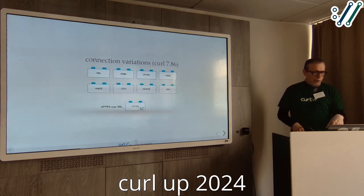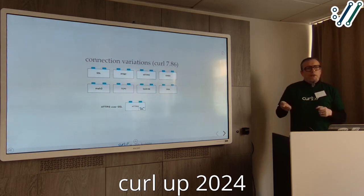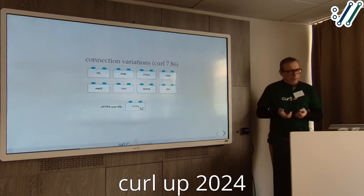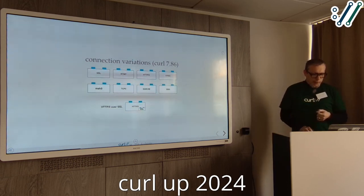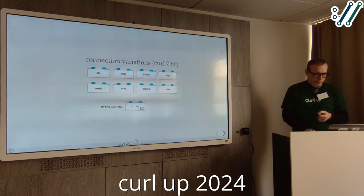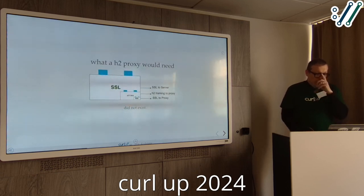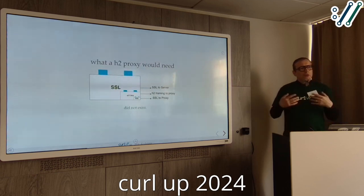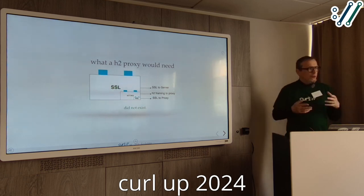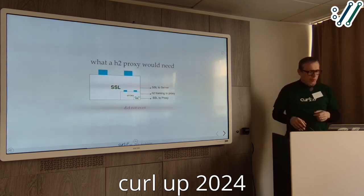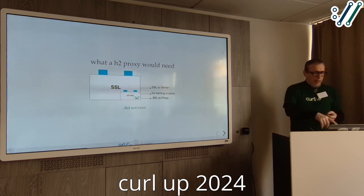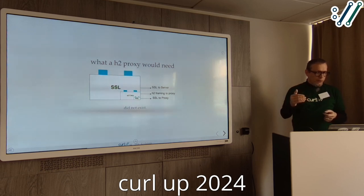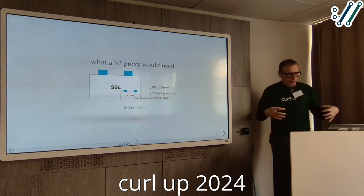For HTTP/2, it again had the possibility to set up SSL internally — that was a unique thing to the HTTP/2 implementation. What an H2 proxy would need is: you have SSL to the server, then the H2 framing layer, then SSL to the proxy — and that needs to be nested.